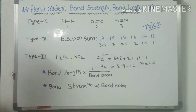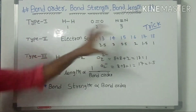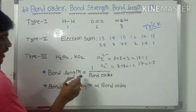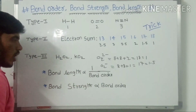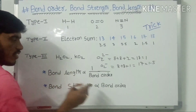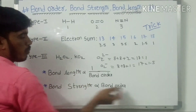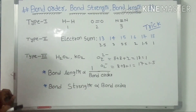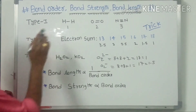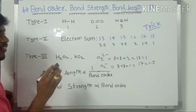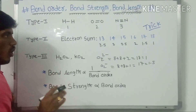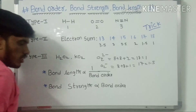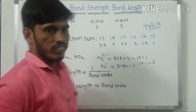Regarding bond order: bond length is inversely proportional to the bond order, and bond strength is directly proportional to the bond order. This is all about bond order, bond strength, and bond length. This is the important trick for this concept. Thank you very much.